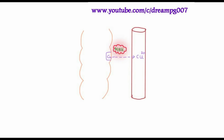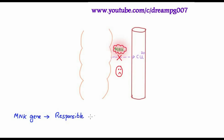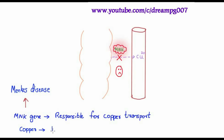When this gene gets mutated, the copper is not transported to the bloodstream. Copper ions present in the intestine cells eventually shed off. This MNK gene is responsible for copper transportation, and when mutated it results in Menkes disease. The copper is attached to the intestine cells with the help of metallothionein protein.